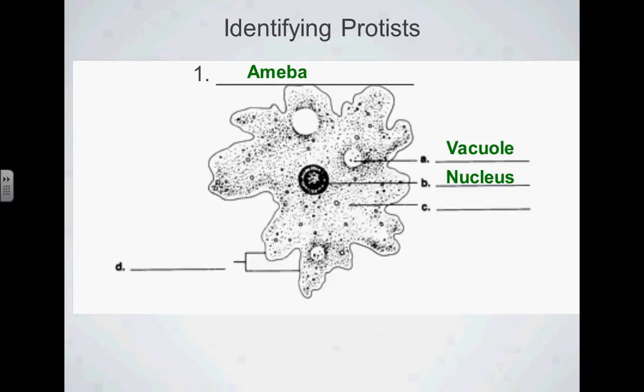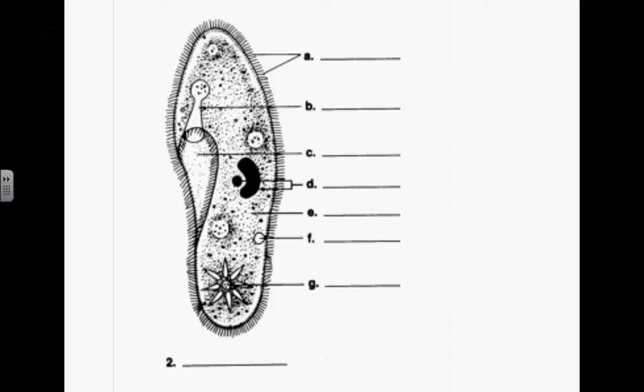So based on that, you could probably figure out what C is as well. If this is a single cell, what is C pointing to, this stuff? Basically, almost all of the filling of this amoeba, right? Cytoplasm? It's cytoplasm, yeah. And finally, D, these little extensions here. This should be an easy one. Those are the pseudopods, yes. So that's an amoeba. Pseudopods.